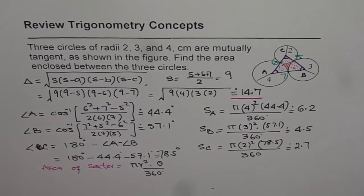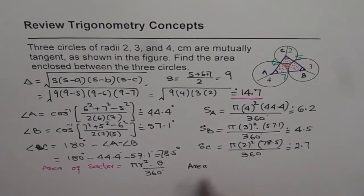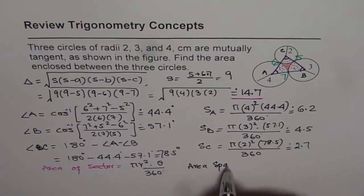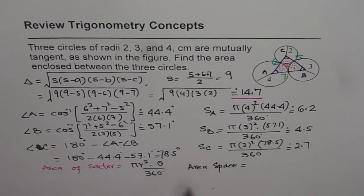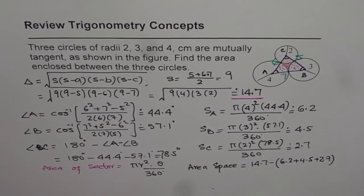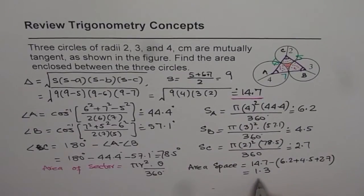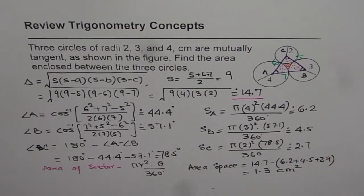Now we can find the area of enclosed space. So the area of enclosed space is how much? So we write area of space is equal to area of the triangle, take away combined area. So it is 14.7 take away 6.2 plus 4.5 plus 2.7. That gives us 1.3. So we get our area as 1.3 and the units are centimeter square. So that is how you can find area of the enclosed space.